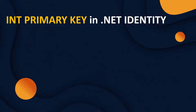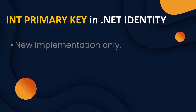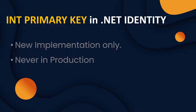Before I walk you through that workaround, let me tell you two main points. First, if you are implementing this, it is only meant for new implementations. Do not do this in a production application. The reason is that when you change the primary key of the table, you will have to delete all the old migrations and create new ones because you are changing the core implementation of dotnet identity. It is not impossible to do in an existing project, but it will be far more complex.